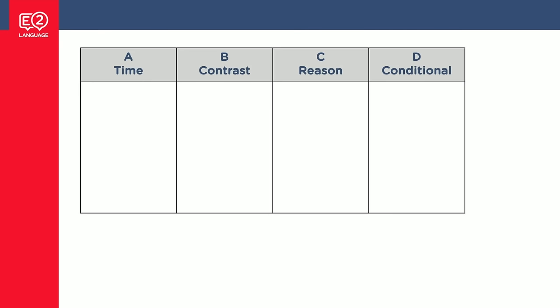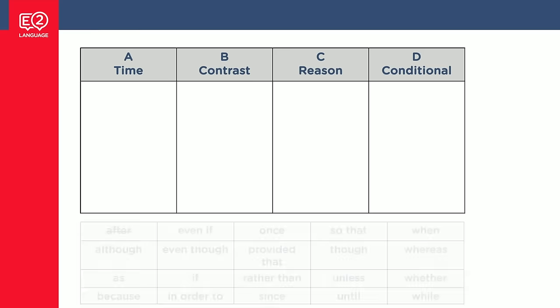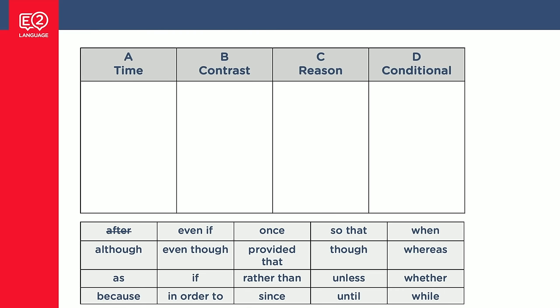You can see how subordinating conjunctions show a relationship between the two parts of the sentence — they might be showing a time connection, a contrast connection, or a conditional connection. Here's the list, and I want you to take 30 seconds and put each subordinating conjunction in the right column. Are they showing a relationship of time, contrast, reason, or condition? I'll do the first one — 'after' is showing a time relationship. For example, 'After I got home, I cooked dinner.'